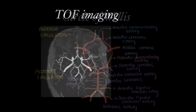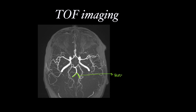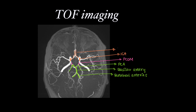On time of flight imaging we can see both vertebral arteries, the basilar artery, the terminal branches which are the posterior cerebral arteries, the posterior communicating artery, the internal carotid artery, the anterior cerebral artery, and the anterior communicating arteries.